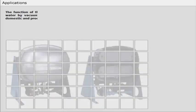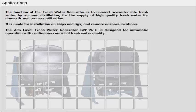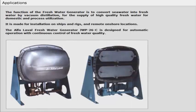The function of the Freshwater Generator is to convert seawater into fresh water by vacuum distillation for the supply of high quality fresh water for domestic and process utilization.